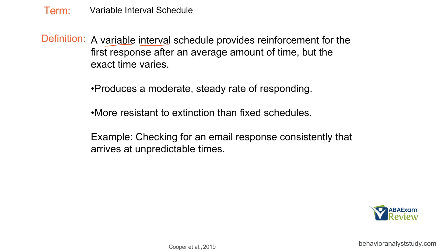A variable interval schedule provides reinforcement for the first response after an average amount of time, but the exact time varies. On a VI3 minutes, you might reinforce after one minute, then two minutes, then five minutes, as long as you're averaging three minutes. This produces a moderate, steady rate of responding for the same reason as variable ratio — you don't know when reinforcement is coming. Like the variable ratio schedule, this is more resistant to extinction because reinforcement has been varied so much.